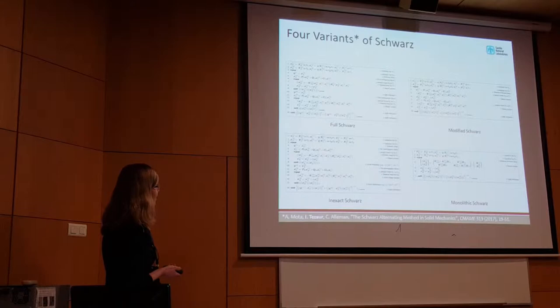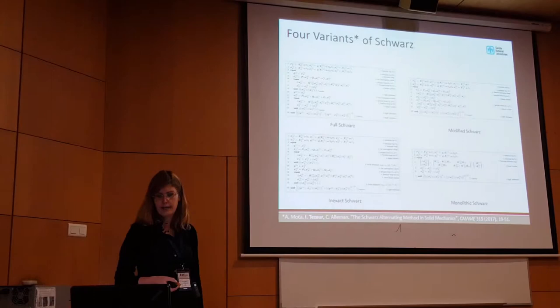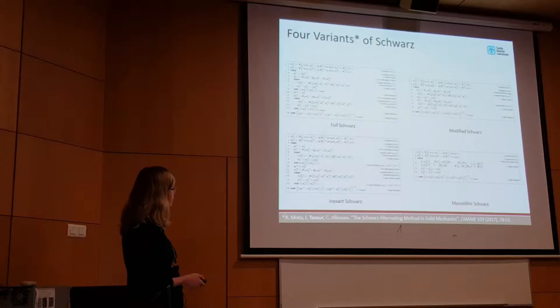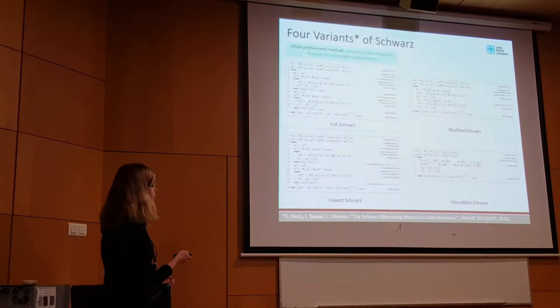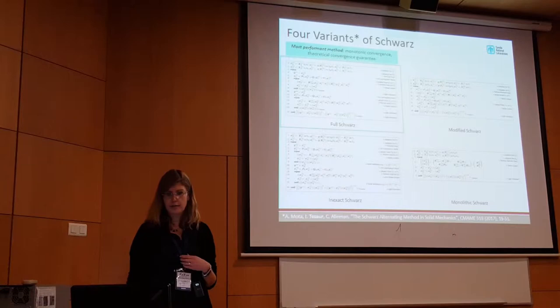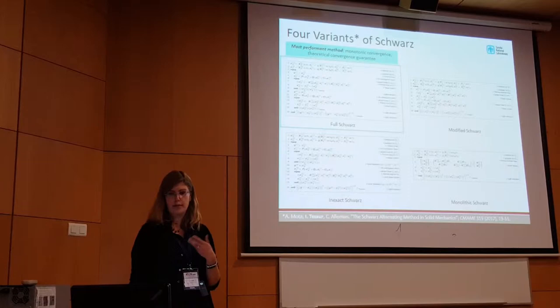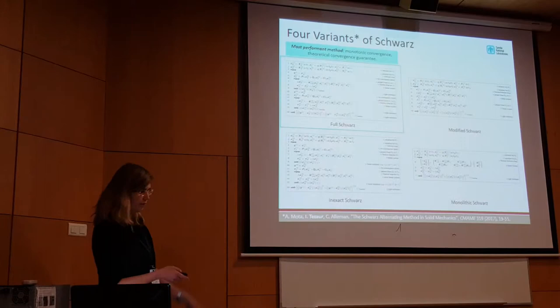In our paper, you'll find four variants of Schwartz — different formulations and implementations. They vary in how the Newton and Schwartz loops are combined, how boundary conditions are imposed, and what tolerances are used. Today I'm focusing on the Full Schwartz, which is the classical algorithm I described. It turns out to be the most performant method — we get monotonic convergence and the theoretical convergence properties I mentioned. If you're interested in the other versions, you can check out the paper.